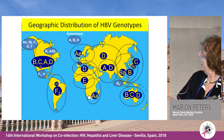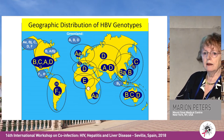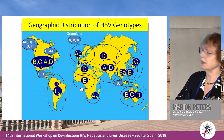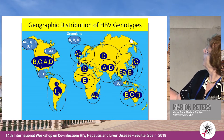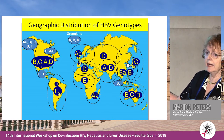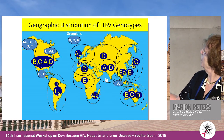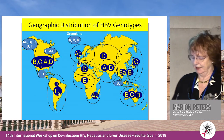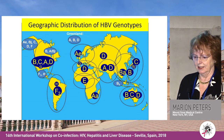Genotype A has a much higher incidence of hepatocellular carcinoma in the young. Genotype C has more progressive disease and perhaps a higher incidence of cancer. Genotype D is associated with antigen-negative disease.